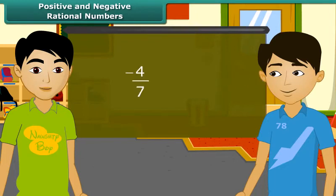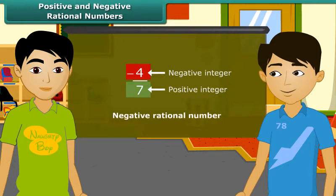And what are the negative rational numbers? When the numerator is a negative integer and the denominator is a positive integer, for example, minus 4 by 7.